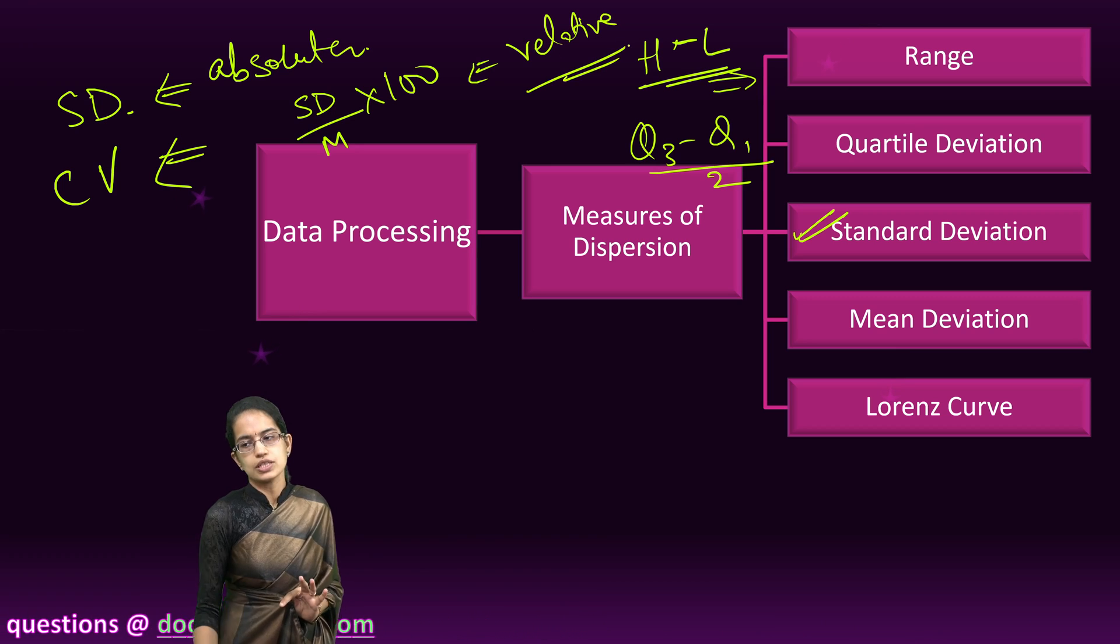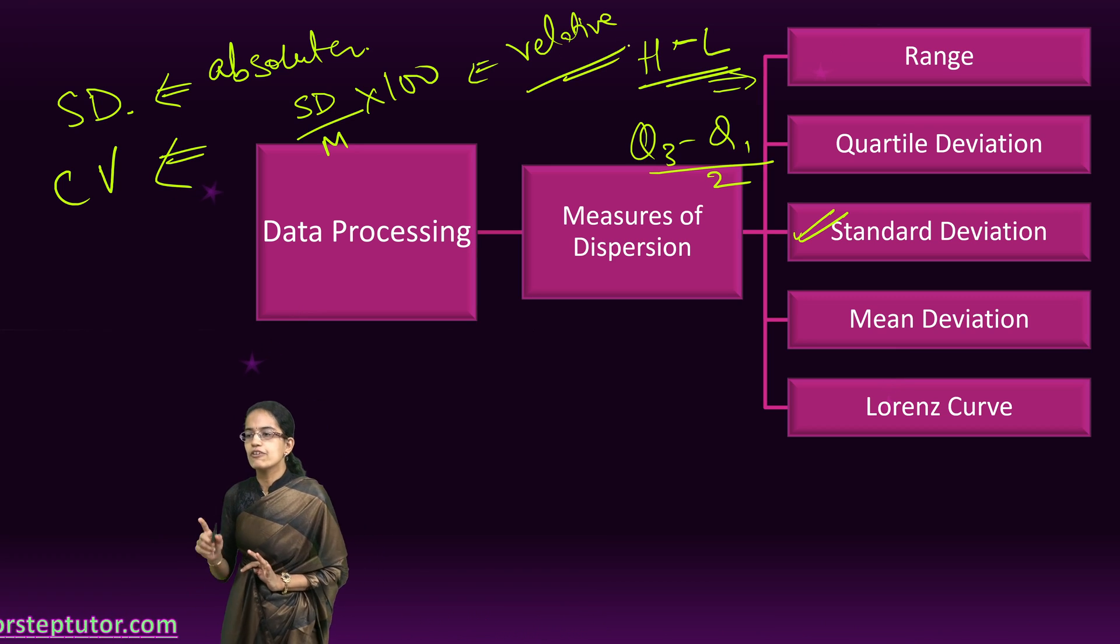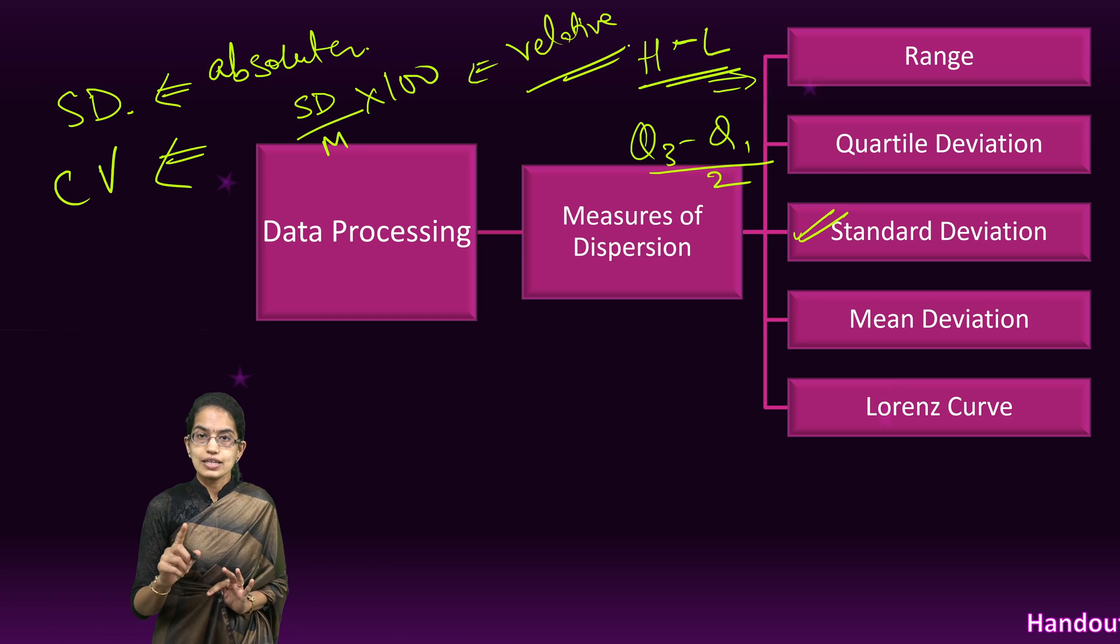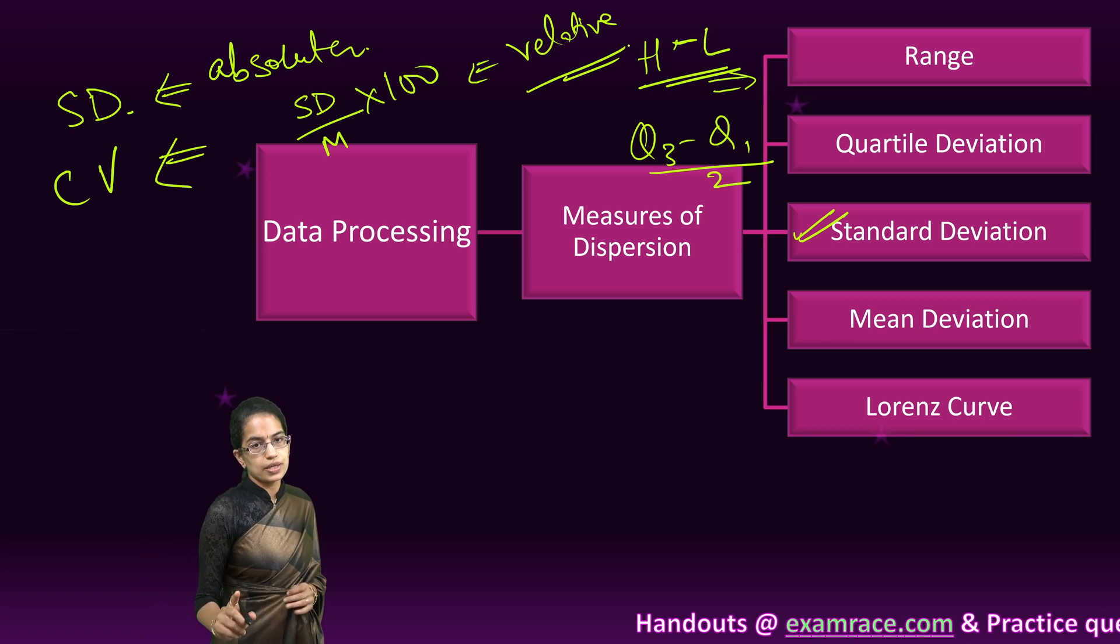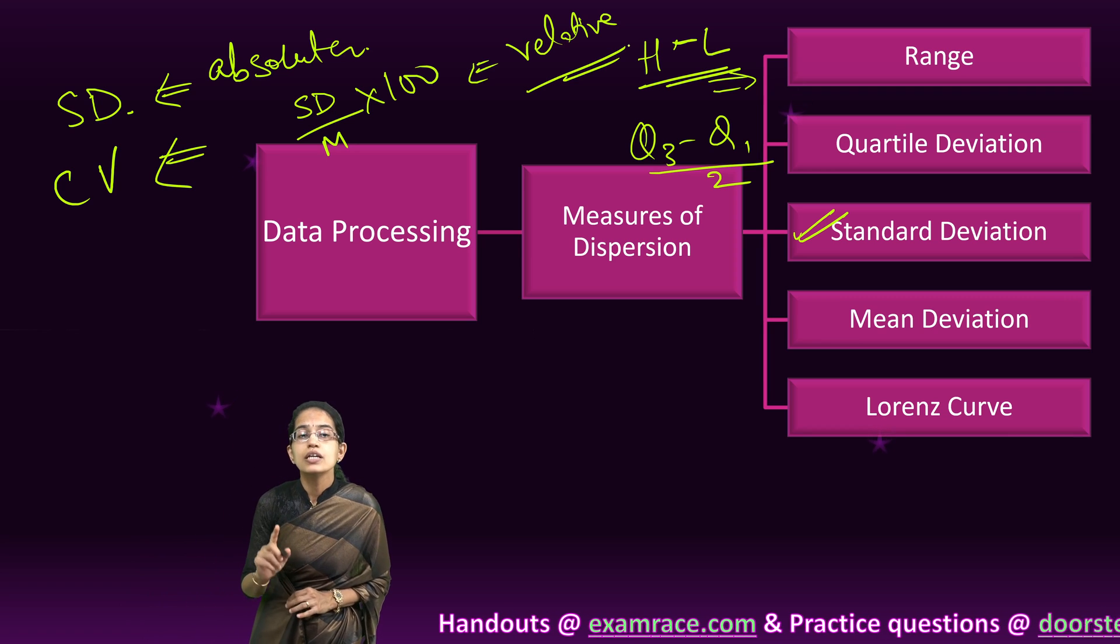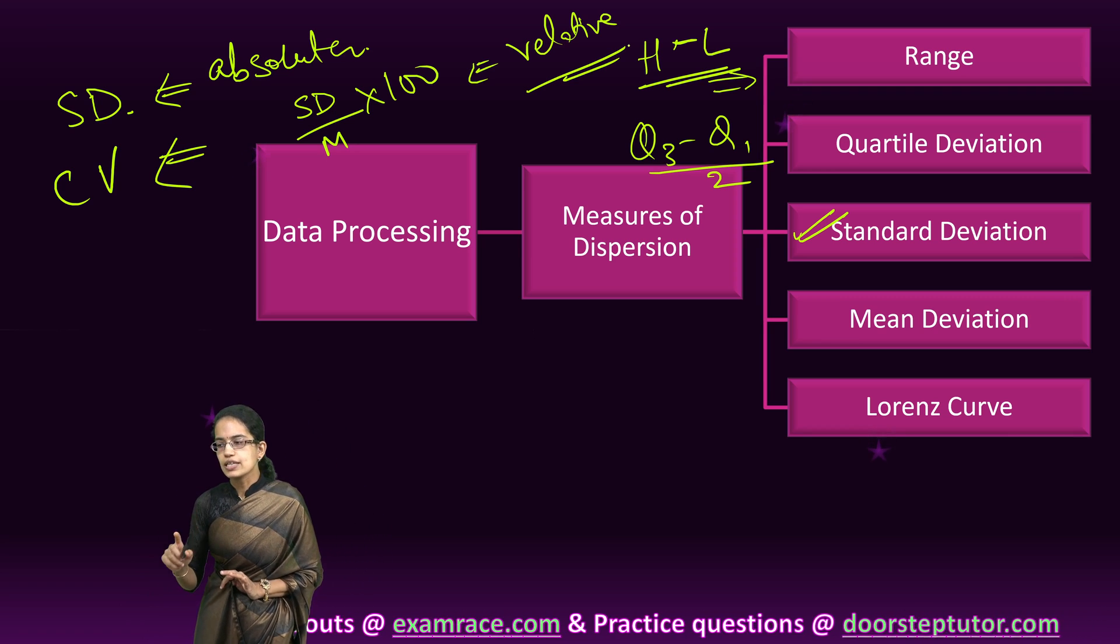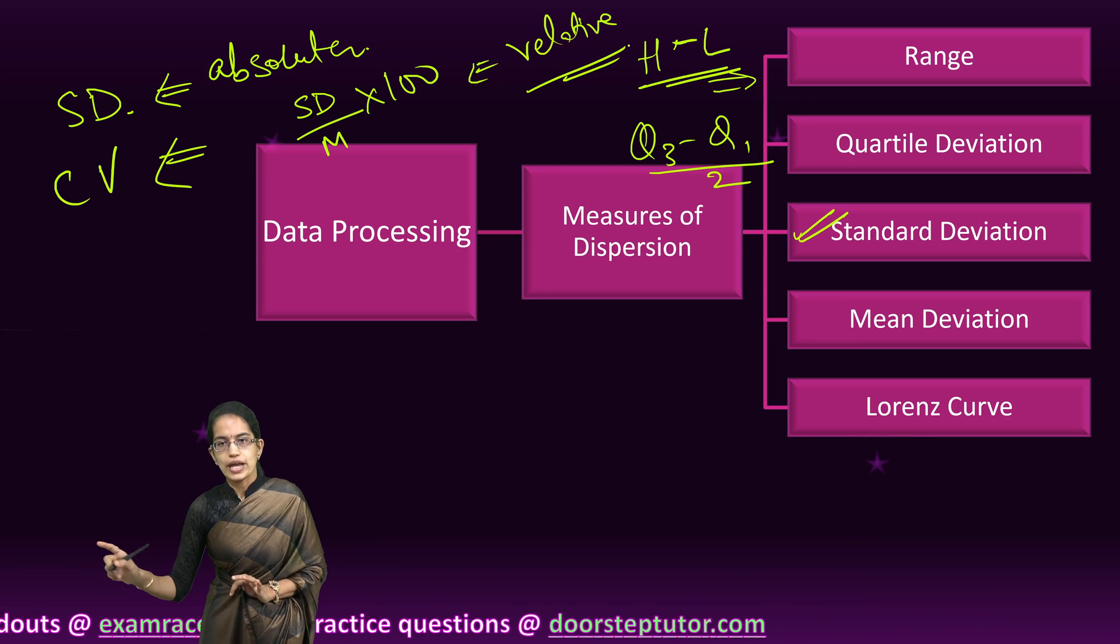Mean deviation is always about the mean and it is calculated with absolute values. Then Lorenz curve helps us explain the inequality in the distribution. These are some of the common ways under which we understand dispersion.